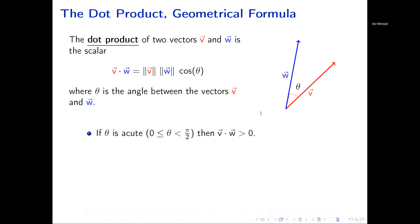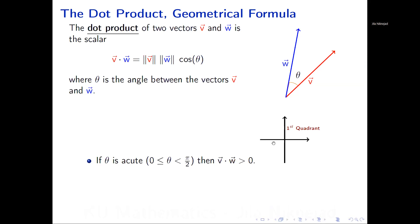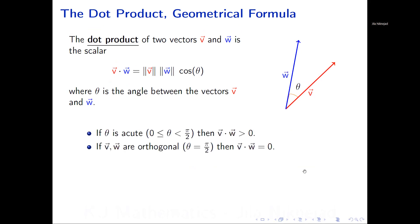If theta is acute — that is, between zero and pi/2 — then the dot product v dot w is greater than zero. That's because theta in that range is in the first quadrant, where cosine is positive. The other two factors are always positive since they're magnitudes, so the product is positive. If v and w are orthogonal, theta equals pi/2, and then v dot w equals zero. This is very important because we use it to determine if two vectors are orthogonal.